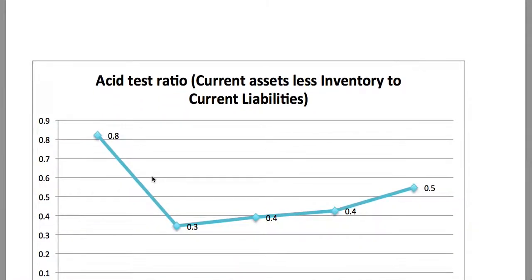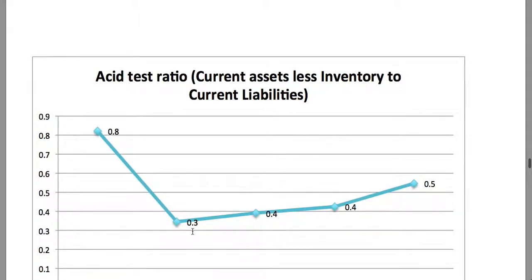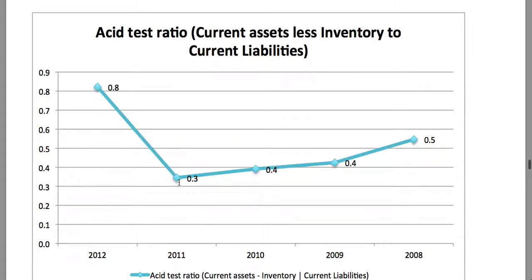The acid test ratio, which gives an indication of the company's ability to cover their current liabilities with current assets less inventory, has also improved. It's almost one to one at 0.8, up from 0.3 — which is a substantial jump from 2011 to 2012.